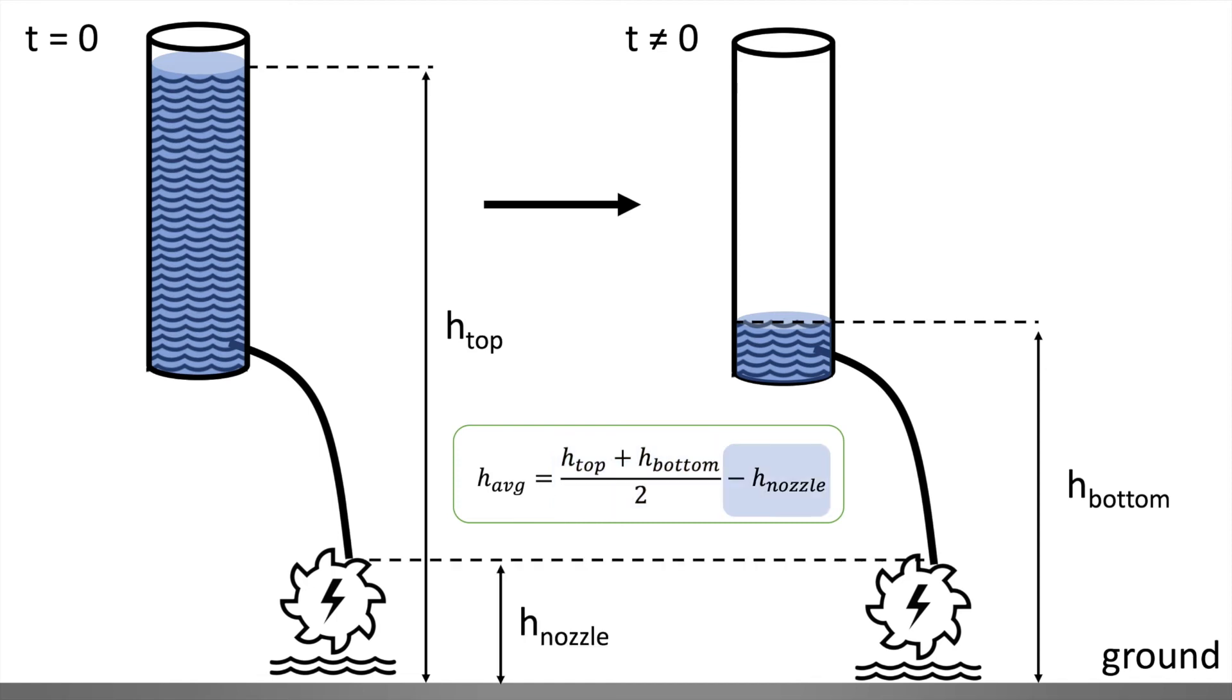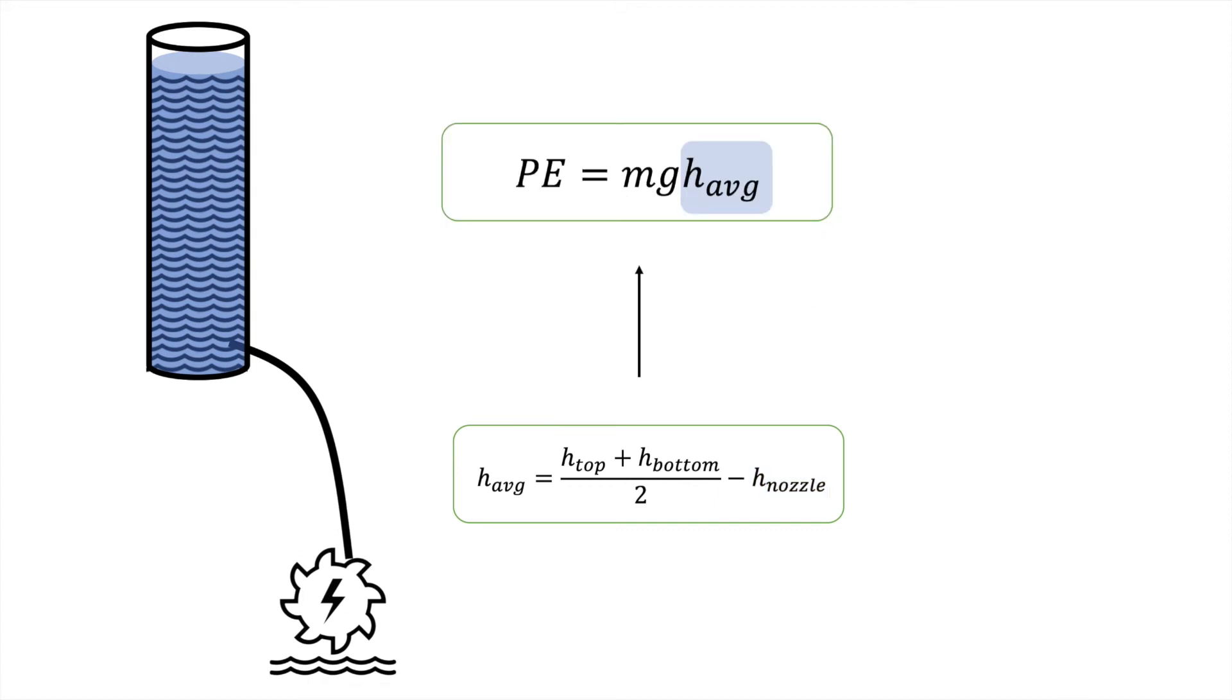We also need to discount the height of the nozzle. So we make sure we are accounting only for the path of the water that will become electrical energy. Finally, we can calculate the change in potential energy by using the average height we previously determined. This will be our theoretical energy.